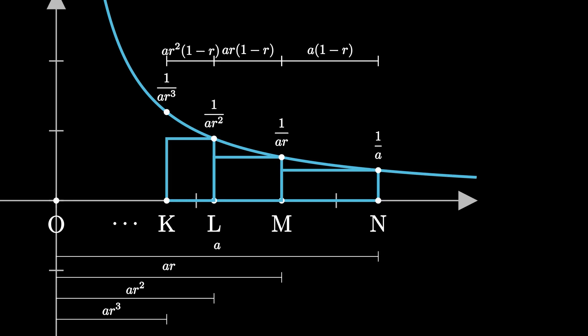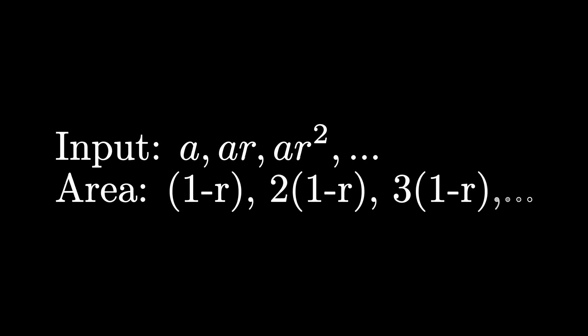What happens when we find the area? Surprisingly, we get that the area of each and every rectangle is the same, just 1 minus r. What does this mean? It means that as the distance from 0 grows geometrically, since that's how our rectangle's widths are defined, our area grows arithmetically, in equal increments.